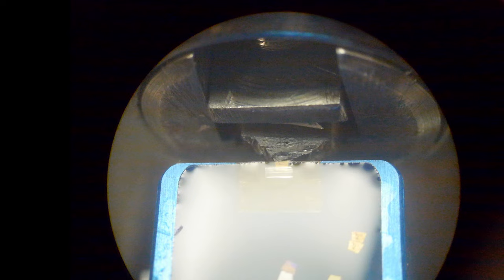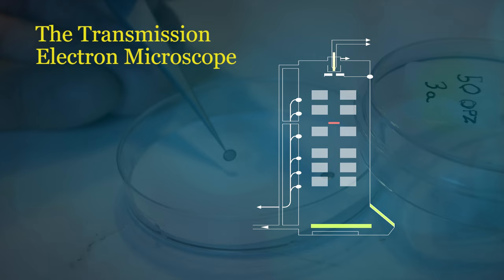The grid is lowered into the water bath and the sections maneuvered onto it. The grids with the sections on them are then dried on filter paper.